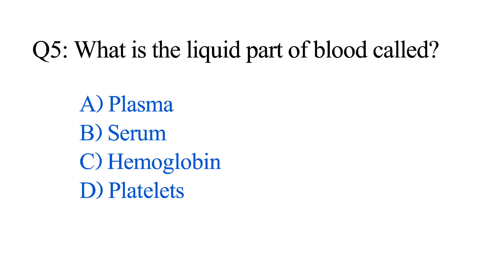Question number five. What is the liquid part of blood called? Option A: Plasma. B: Serum. C: Hemoglobin. D: Platelets. The correct option is Option A: Plasma.